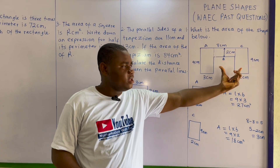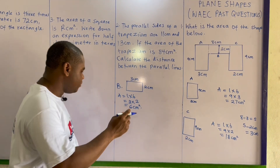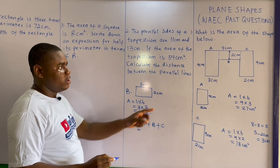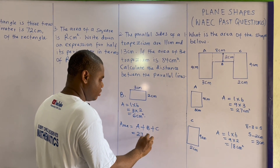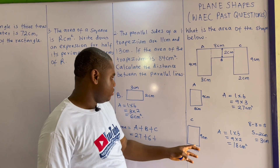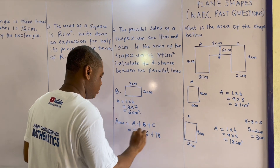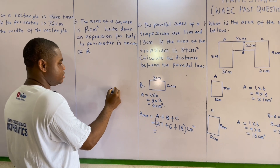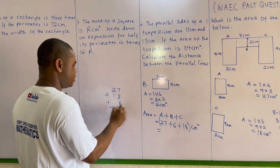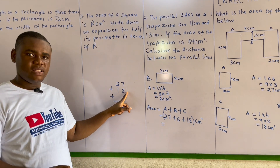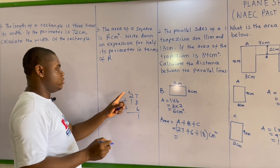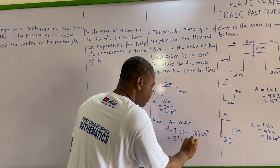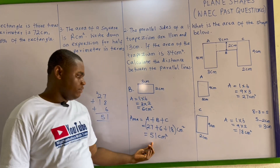To calculate the total area of the shape, we add the areas of A, B, and C. Area of A is 27, area of B is 6, area of C is 18 — all in centimeters squared. So 27 plus 18 plus 6: seven plus eight is 15, plus six is 21, carry the two, two plus two is four plus one is five — giving us 51 centimeters squared.